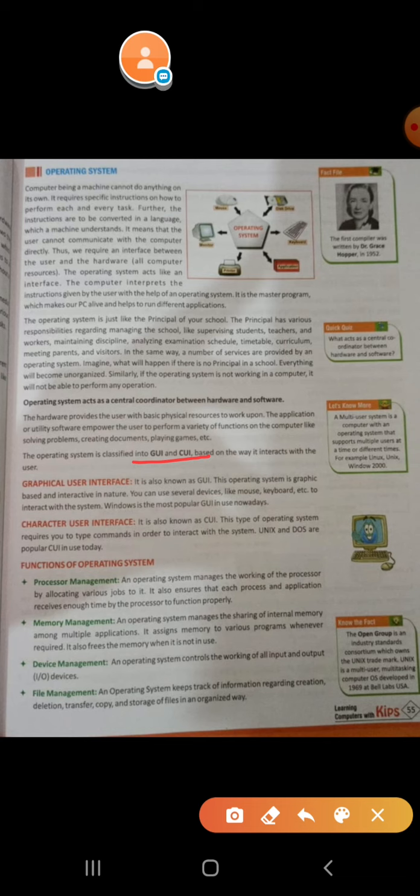In a Graphical User Interface, to interact with the system you use simple mouse clicks — you don't have to write commands. But in CUI, if you have to give commands to the computer, you write commands using something like Unix. This is the Character User Interface operating system.